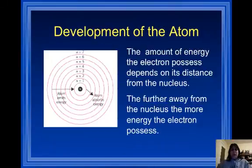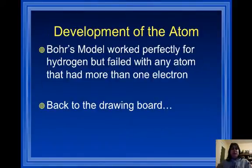Now we know from Niels Bohr's experiments that the amount of energy the electron possesses depends on its distance from the nucleus. So the further away, the more energy the electron has. Now Niels Bohr's model worked perfectly for the hydrogen atom, but it failed all tests with any atom that had more than one electron.